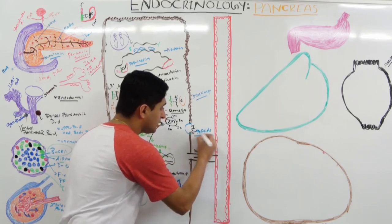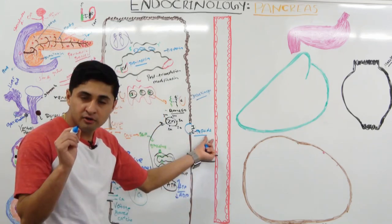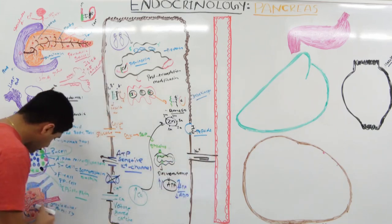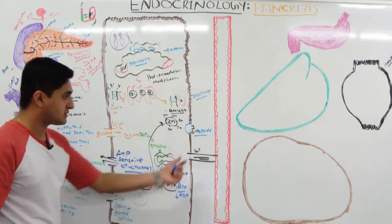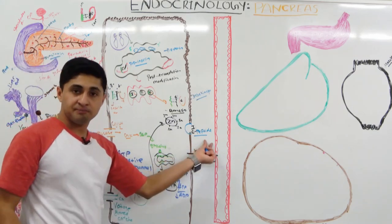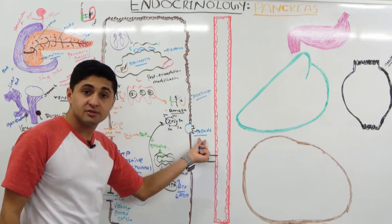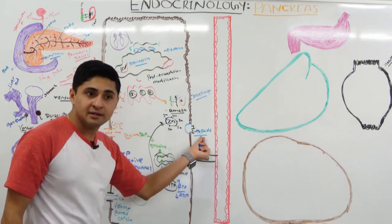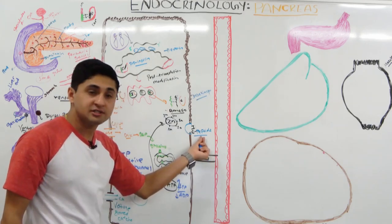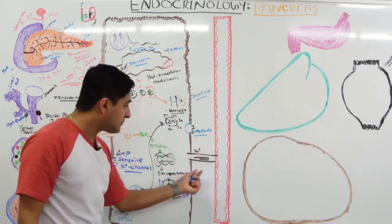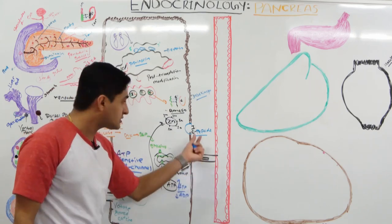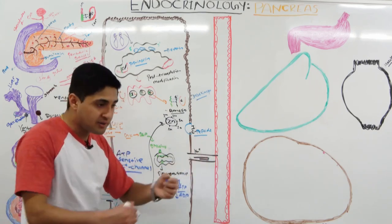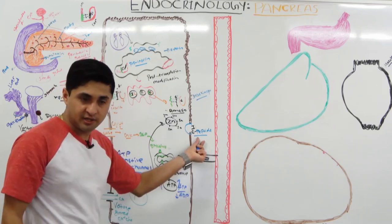C peptide is a biomarker to assess beta cell function. Some studies also show that C peptide works in endothelial cells to produce nitric oxide, helping maintain vasodilation and good blood circulation.